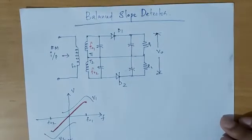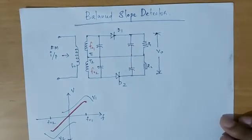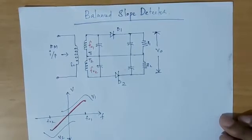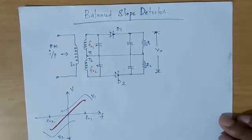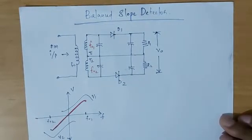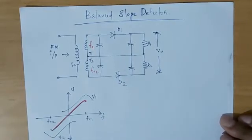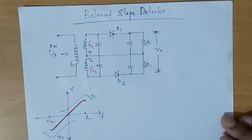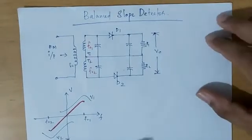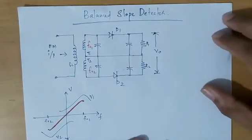The input transformer has a center-tapped secondary section. Because of the center tap, the input voltages to the two slope detectors are 180 degrees out of phase. This is the basic circuit diagram of a balanced slope detector.